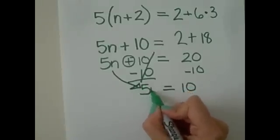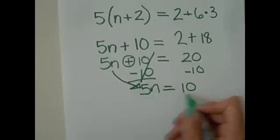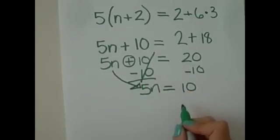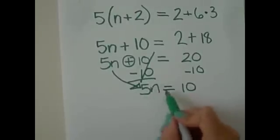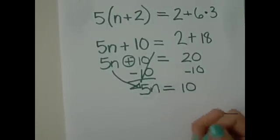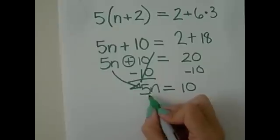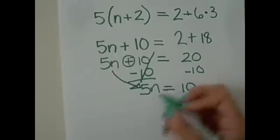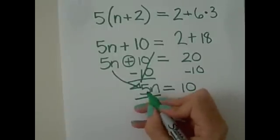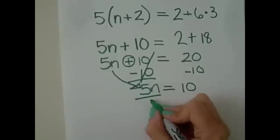Now, we're almost done. Because we need to, again, isolate this variable. We want to get the n by itself. So, how do we do that? Here, we see multiplication. So, the opposite of that would be division. So, we want to divide 5n by 5.